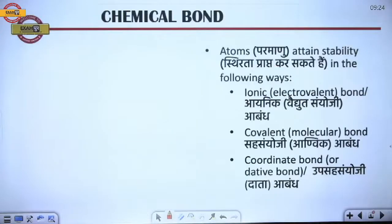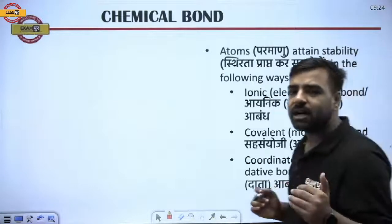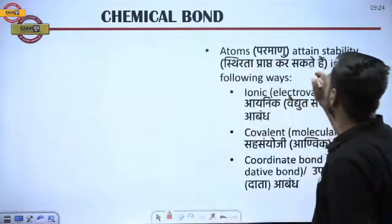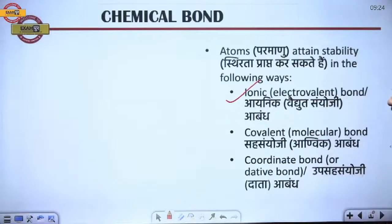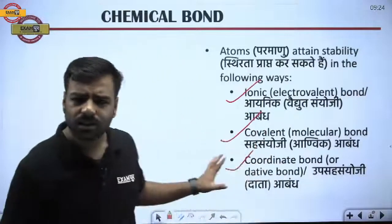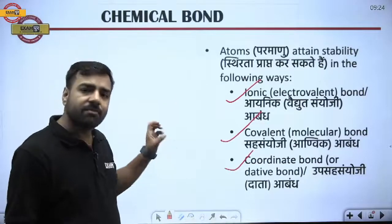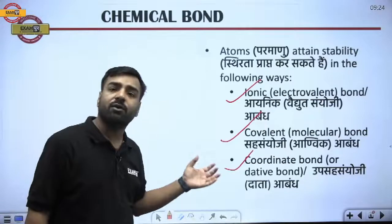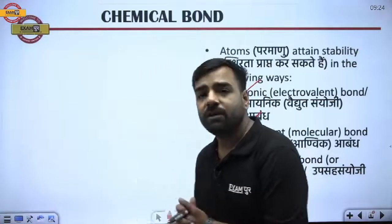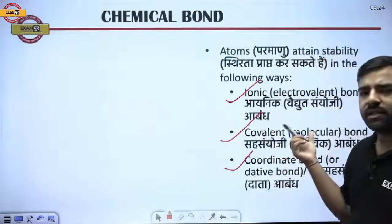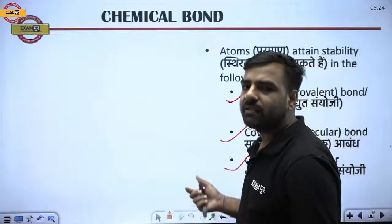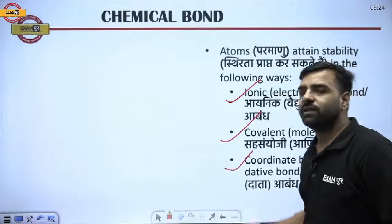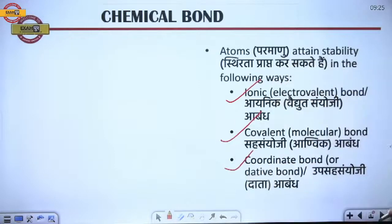Stability is very important in our life. We want good money, a good family — we want our life to be sorted. In the same manner, the 118 elements in the periodic table — metals, non-metals, metalloids — they also want stability. Atoms attain stability through three types of bonding: ionic bond, covalent bond, and coordinate bond. We will go through each one, and at the end I will tell you which is the strongest bond.